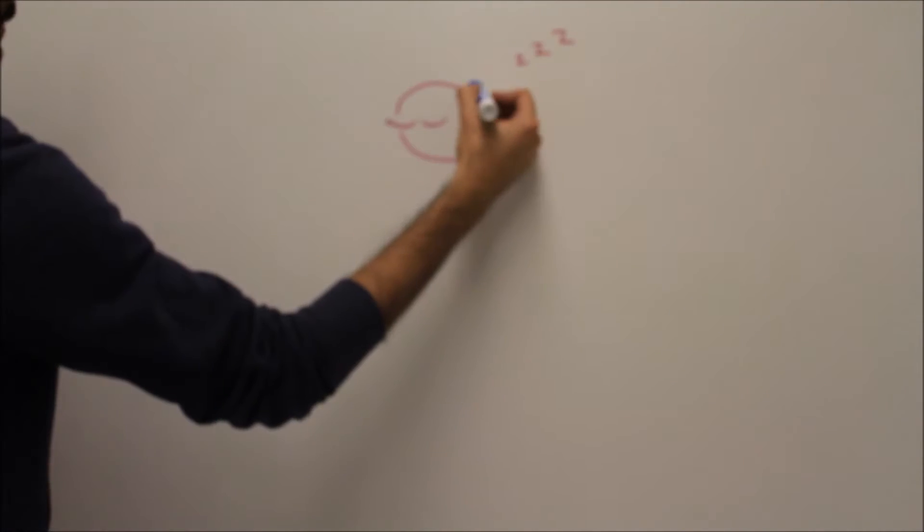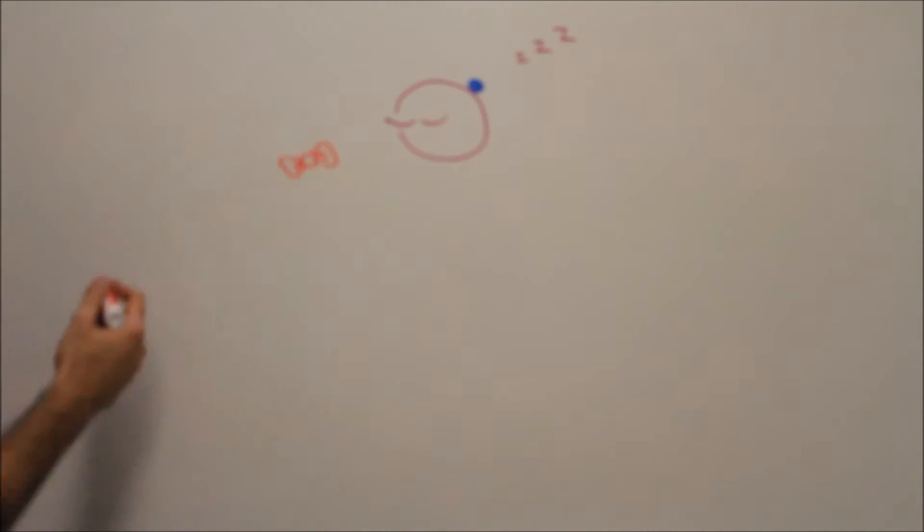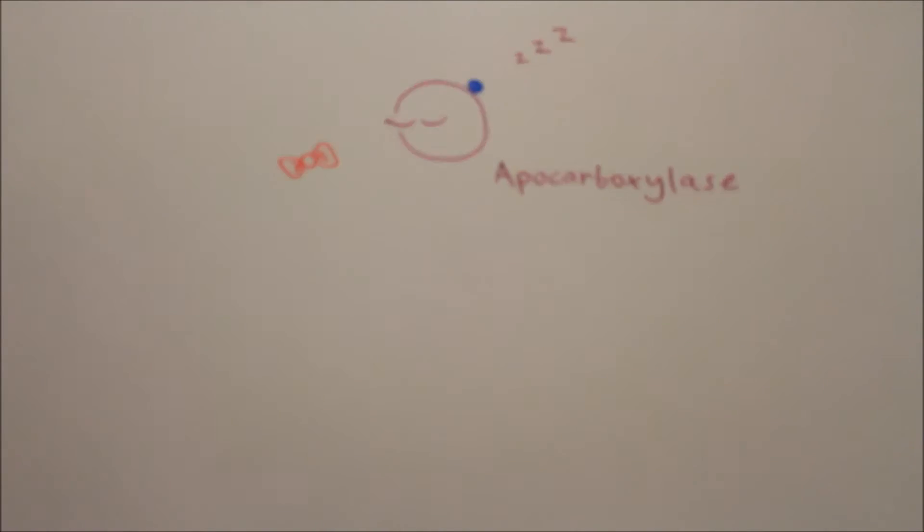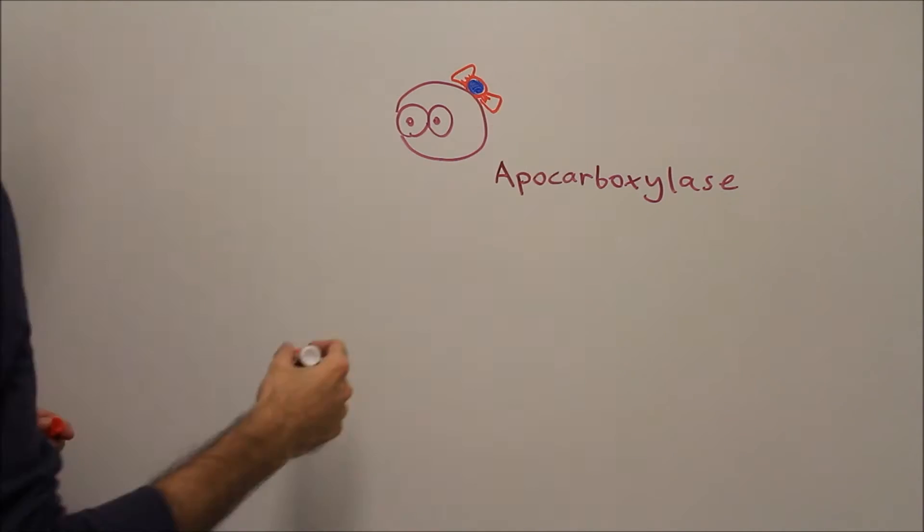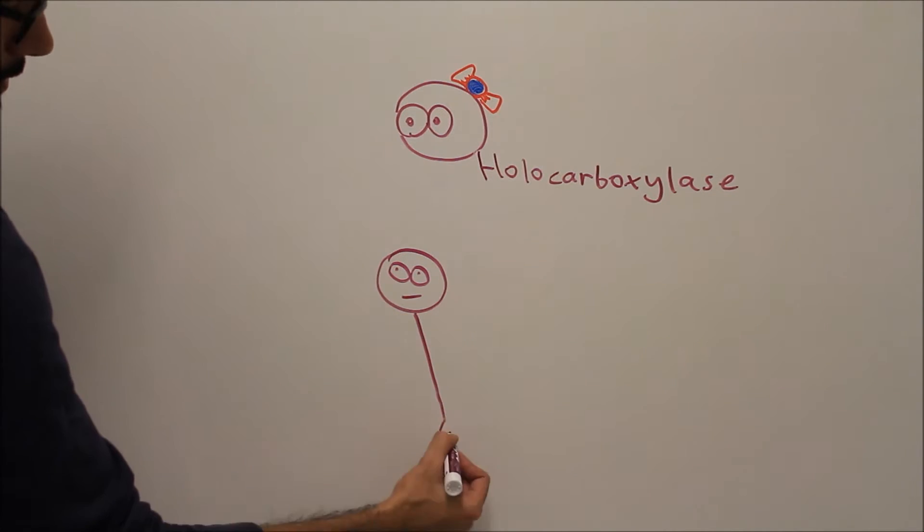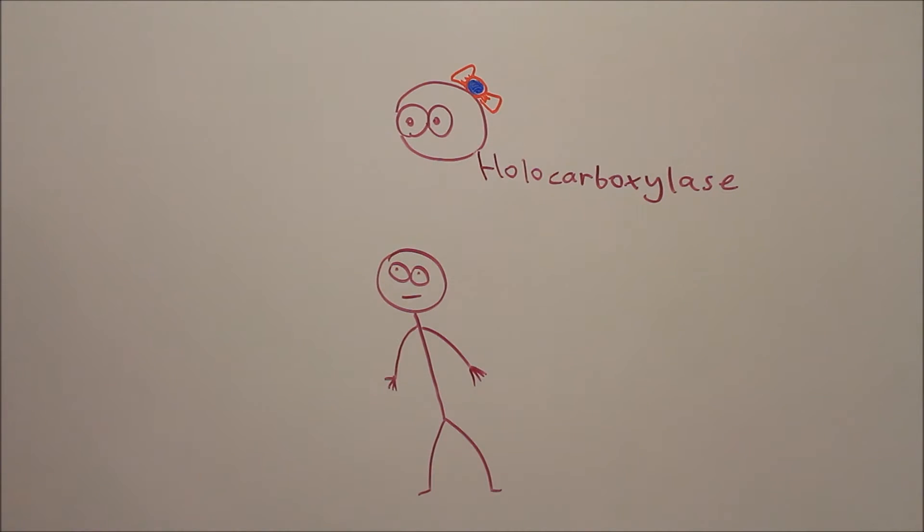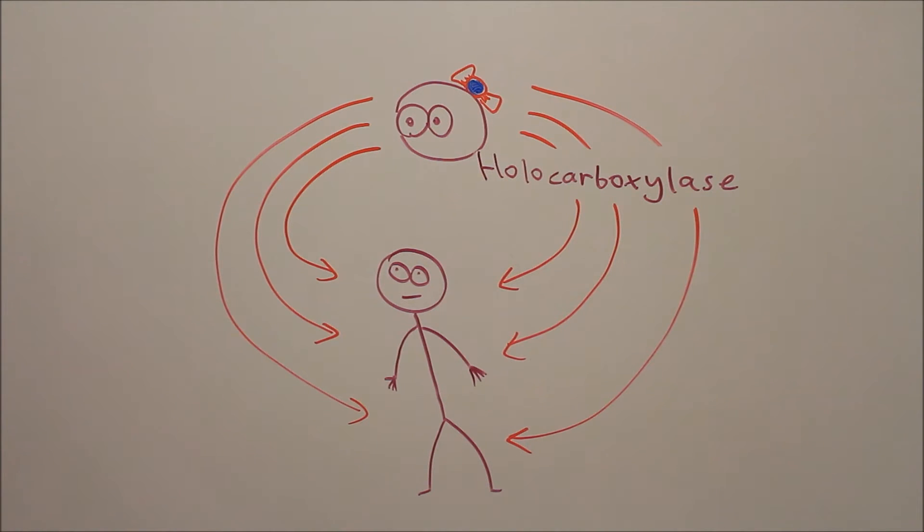Once biotin is inside the target cells, it will bind as a cofactor to a lysine residue on inactive carboxylases, called apocarboxylases. Upon this binding, the carboxylase will become activated, and activated carboxylases are known as holocarboxylases. These are critical members of vital metabolic pathways, so their non-function can lead to a variety of complications, much like we saw in our case study.